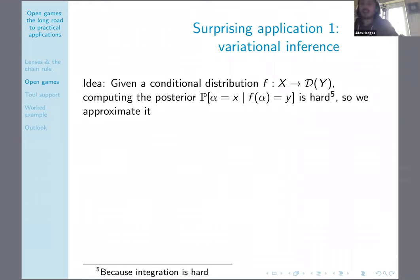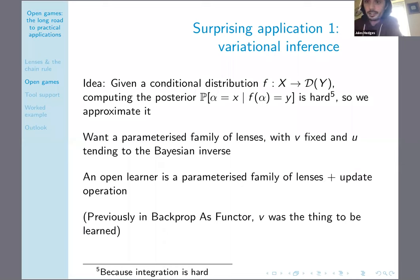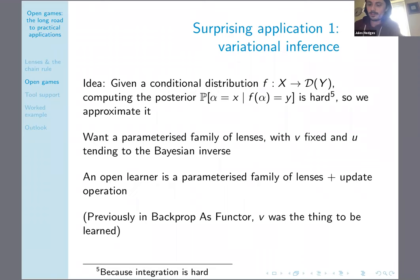Coming back to Bayes' law: on real examples, computing posteriors is hard because integration is hard. The state of the art is something like 500 dimensions, but people would like to go much higher. I have this in mind as a new application of backprop functors. So far in backprop functors, the goal has been to learn the forwards thing V, where the backwards thing is the computed derivative of the forwards thing. Here it's the other way around: the forwards thing is fixed and we're trying to learn the backwards thing — we're trying to approximate the Bayesian inverse.